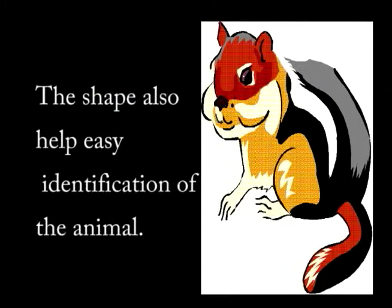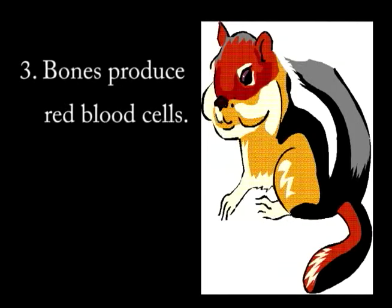The shape also helps in the identification of the animal. For instance, this may prevent a goat from mating with a dog, preventing wastage of sperm, because when a dog mates with a goat there will be no viable offspring.